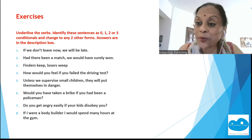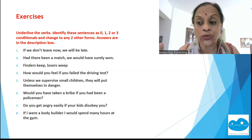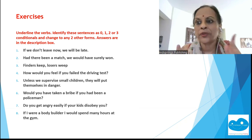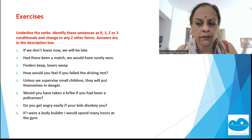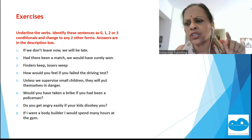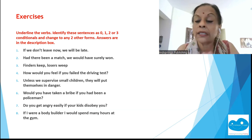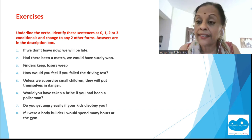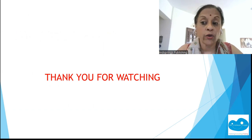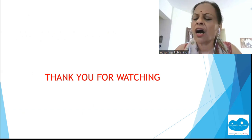Now we've finished the first part — we've covered zero, one, two, and three conditionals, questions, imperatives, 'had' inversion, and 'unless'. For the exercises, underline the verbs, identify whether the sentence is 0, 1, 2, or 3, then change it to two other forms. There are eight sentences — pause the video, do the exercises, and check the answers in the description box. Thank you for watching; I hope you're feeling more confident. Keep smiling!